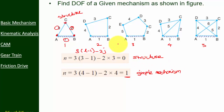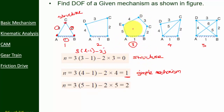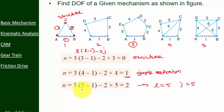For arrangement 3, there are five links: l = 5. The number of joints is also 5. So n = 3(5 − 1) − 2(5) = 12 − 10 = 2. The degree of freedom is two, making this a complex mechanism because the degree of freedom is more than one.